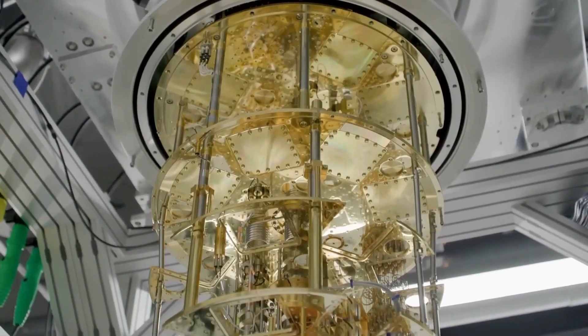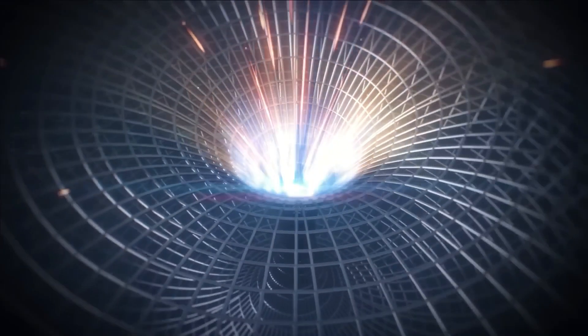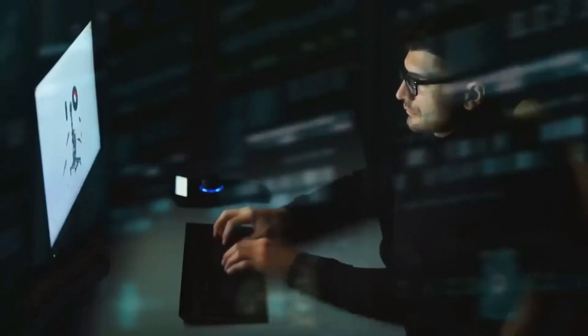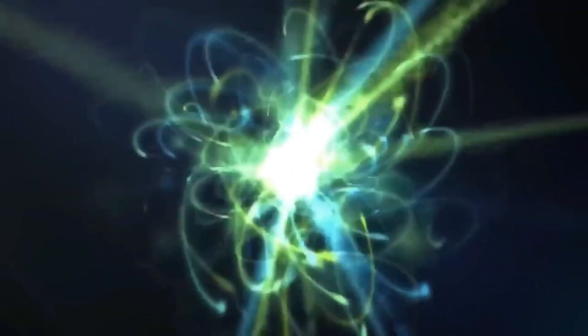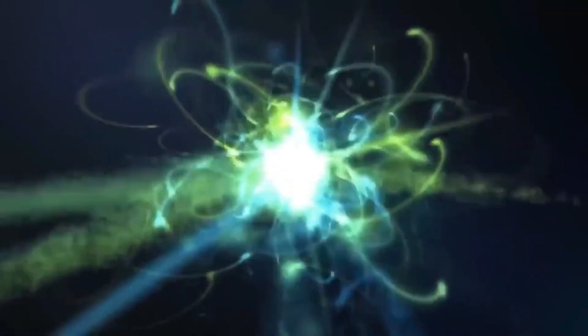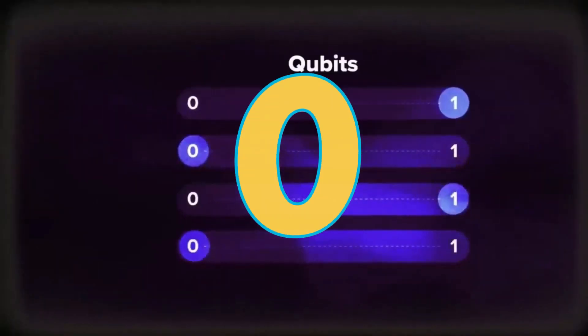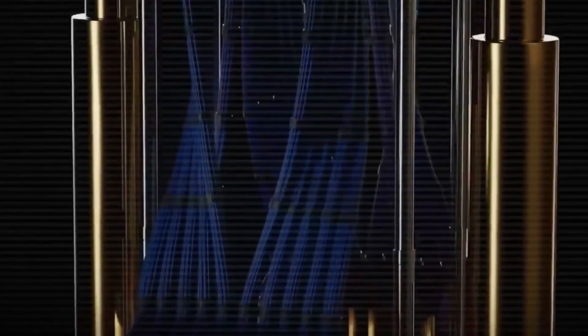What began as a routine quantum experiment quickly turned into an extraordinary revelation. Researchers, expecting nothing unusual, found an anomaly that defied the known laws of physics. Operating near absolute zero, a quantum computer produced a fluctuation that suggested particles were moving faster than light, something that should be impossible.